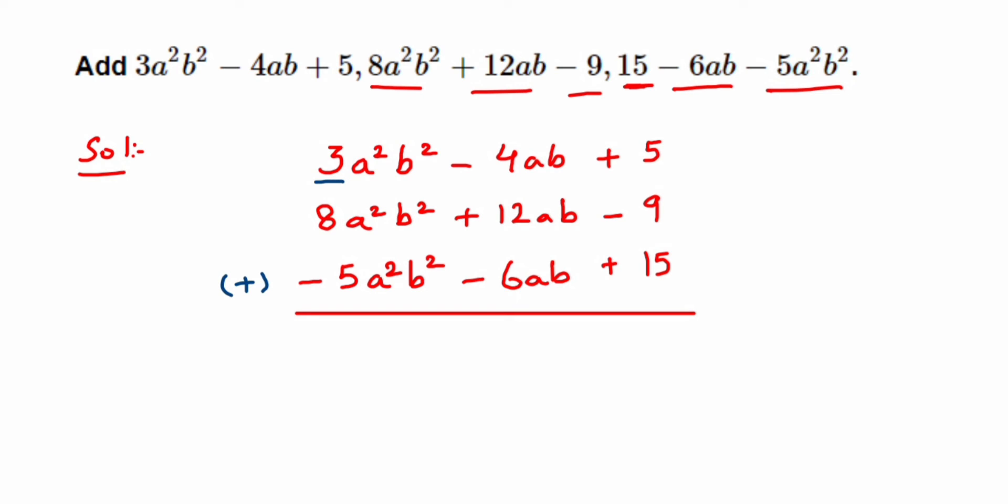11 - 5 will give us 6, so the answer is 6a²b². Just write down the variables as written there and add the coefficients.